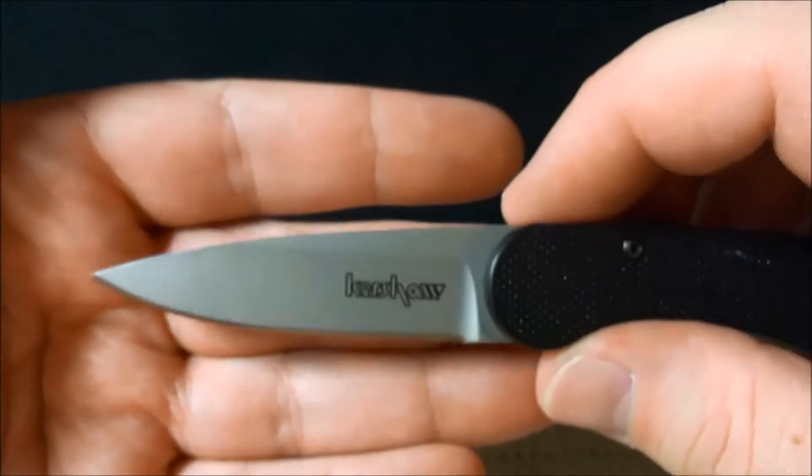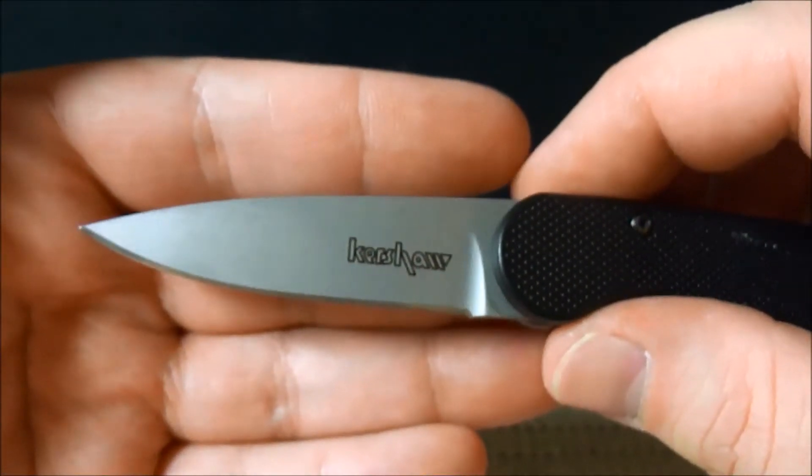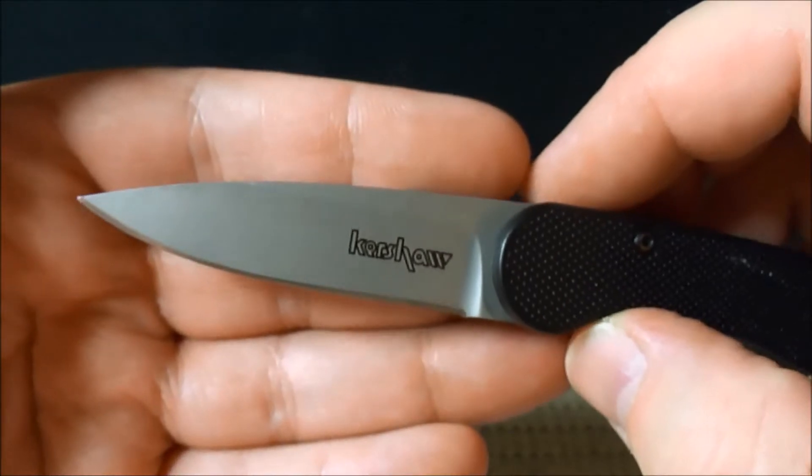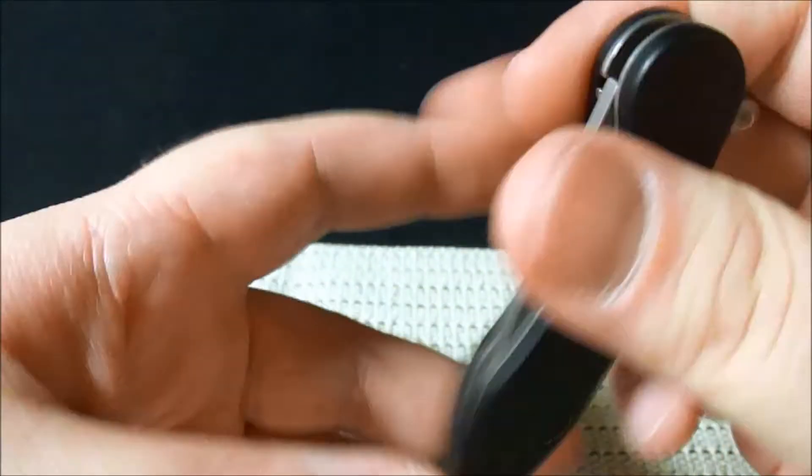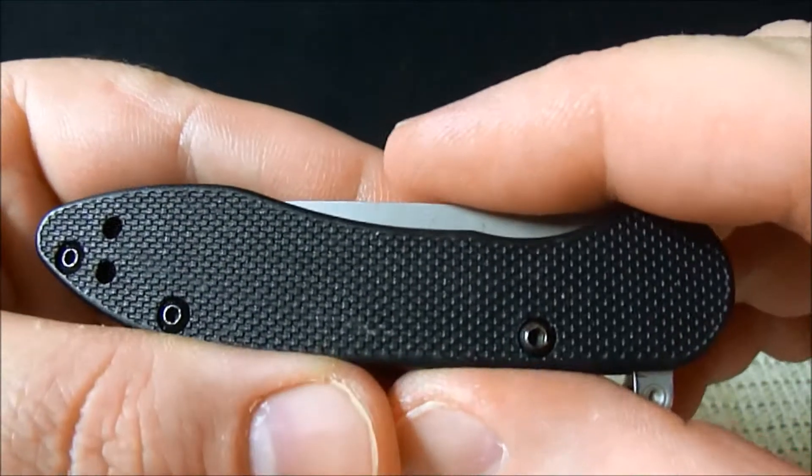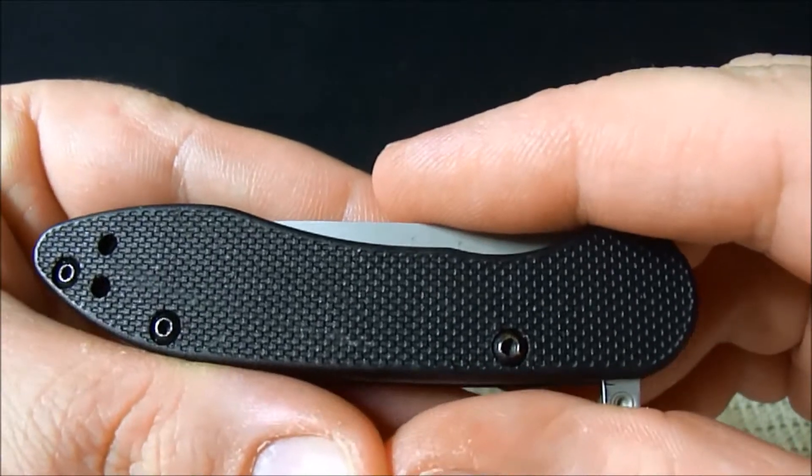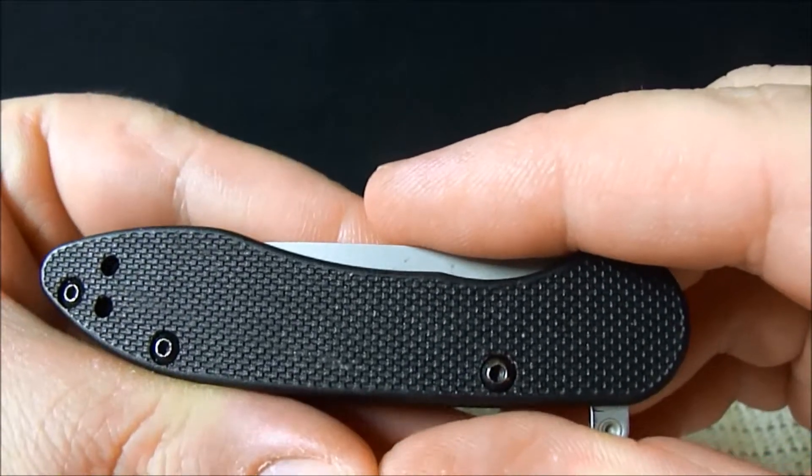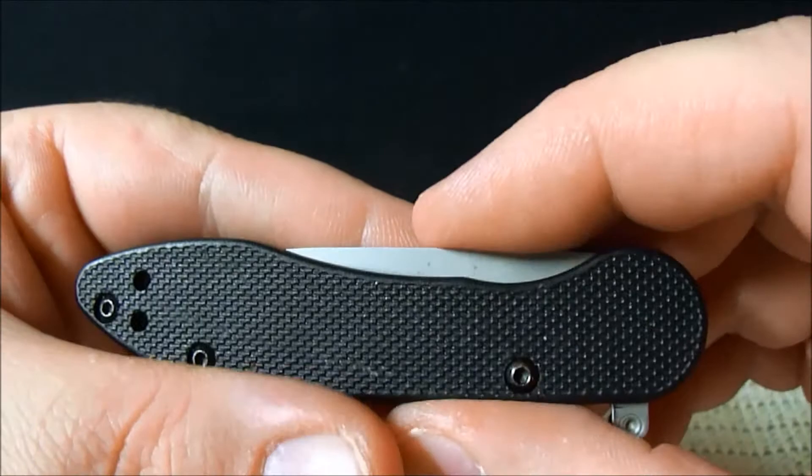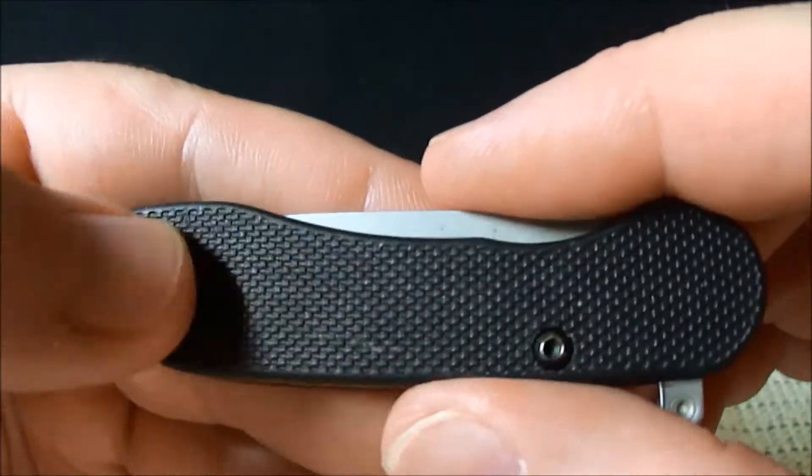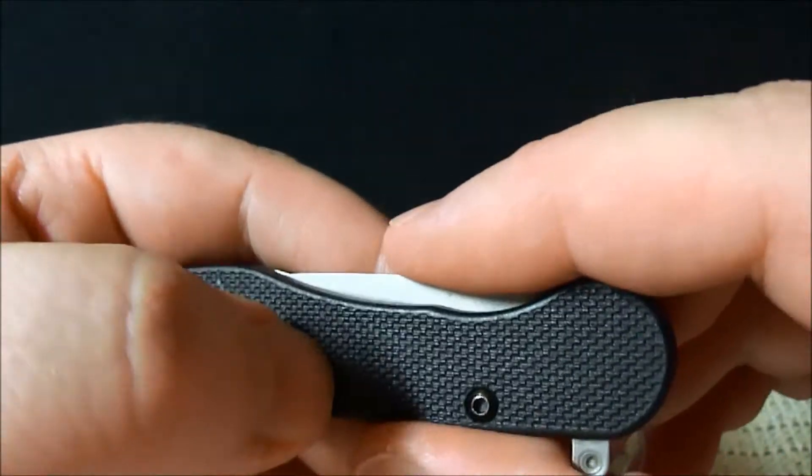A spear point with a bead blast on it, and it is a hollow grind. The handles are GFN. I'm guessing that's just glass fiber. I really hate glass fiber nylon. I'm not sure. It's basically like FRN and all the other stuff.